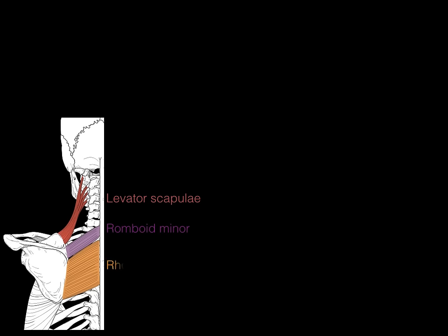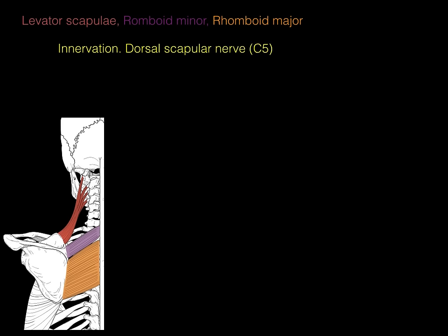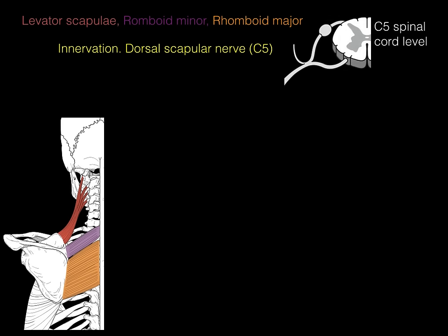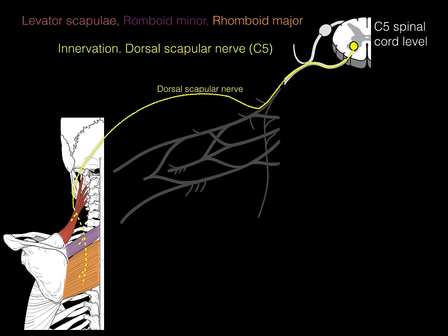The innervation of levator scapulae, rhomboid minor, and rhomboid major is through the dorsal scapular nerve, which arises from the C5 spinal cord level. A motor neuron cell body in the ventral horn gray matter sends its axon through the ventral root and ventral ramus to innervate those three muscles. The nerve takes a road — the brachial plexus, a network of nerves — to travel from the spinal cord to those muscles. The brachial plexus will be covered in more detail in the upper limb section.